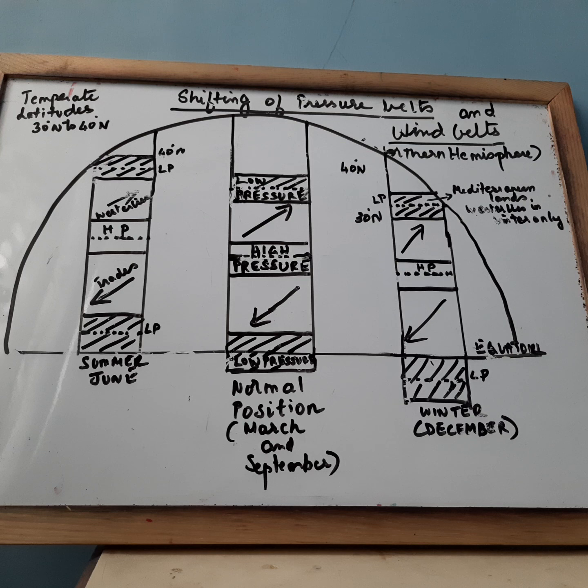The places that lie between 30 degree north latitudes and 40 degree north latitudes in the northern hemisphere, and between 30 degree south latitudes and 40 degree south latitudes in the southern hemisphere, experience Mediterranean type of climate due to shifting of pressure belts.